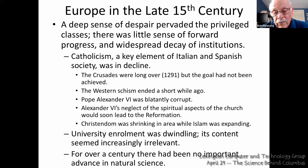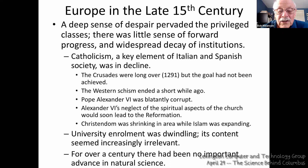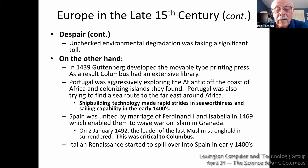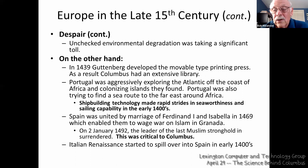In addition to the decline in Catholicism, university enrollment was dwindling and its content seemed increasingly irrelevant. For over a century, there had been no important advance in natural science — for example, Copernicus's publication on the revolutions of the celestial spheres was 50 years away, so the universe still revolved around the earth. Unchecked environmental degradation was also taking a toll: trees and forests were becoming scarce, trees suitable for ship masts were non-existent, and there were few edible fish in rivers because of runoff due to the lack of forests. Opportunities were diminishing and nations were going to find new resources.